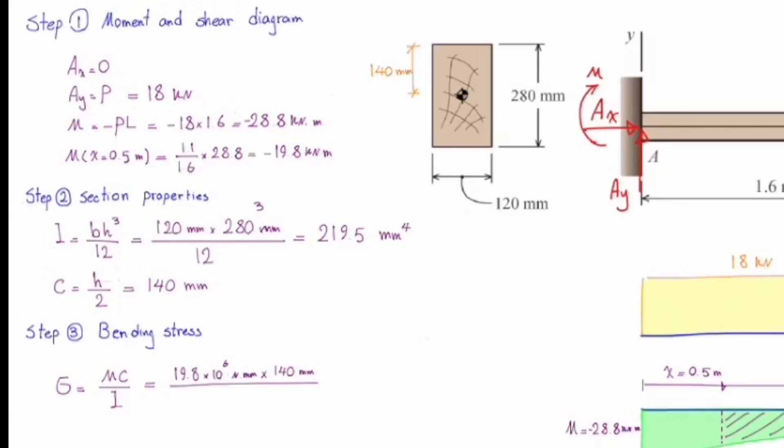And I is 219.5 times 10 to the sixth millimeter to the fourth, which gives the maximum bending stress at that section equal to 12.63 megapascals.